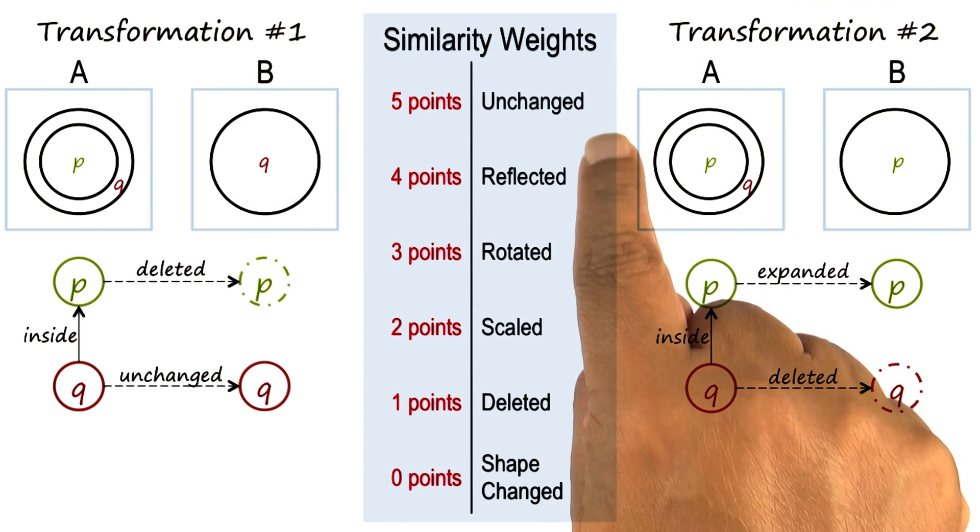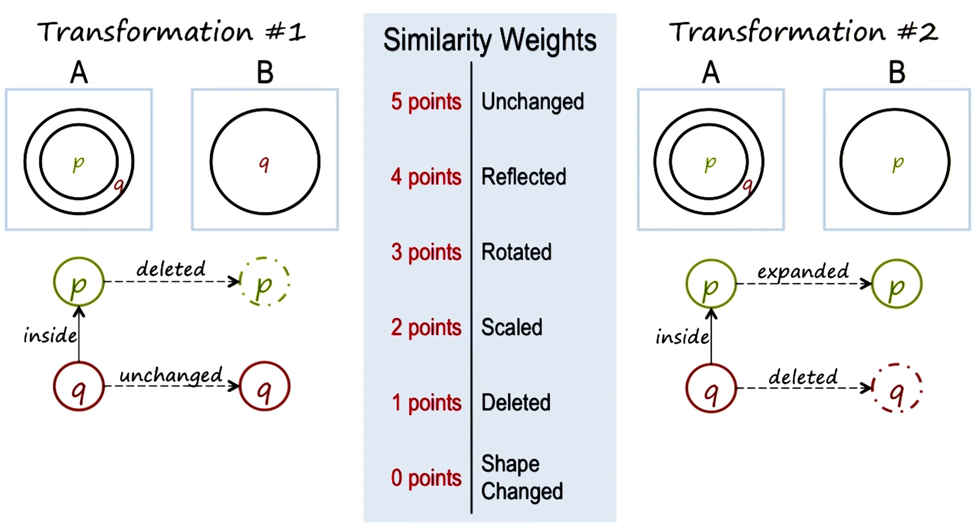In this scale, a larger value, like five points, means more ease of transformation and greater similarity. A lower value means less ease of transformation, a more difficult transformation, and less similarity. Given the scale, let us calculate the weight of transformations for both transformation number one and transformation number two.